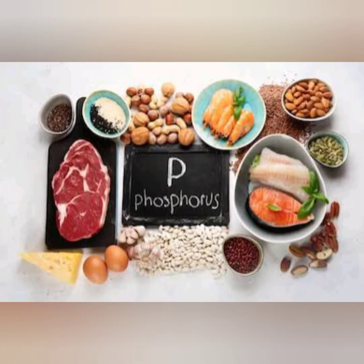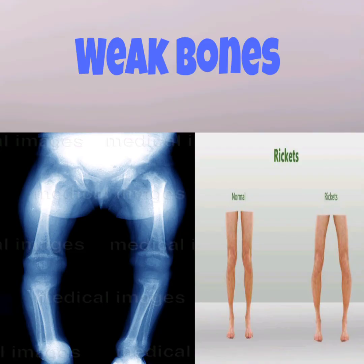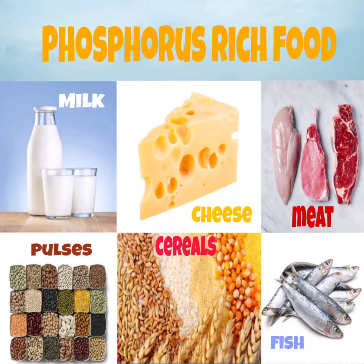Next is phosphorus. If phosphorus is not taken in the proper amount, weak and soft bones will result — we can also call this rickets, similar to what we studied with the lack of vitamin D. We should take foods like milk, cheese, pulses, fish, meat, and cereals.